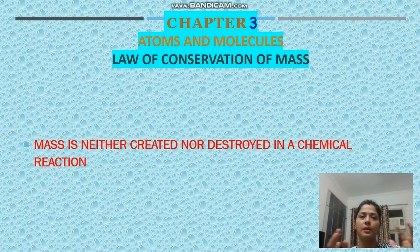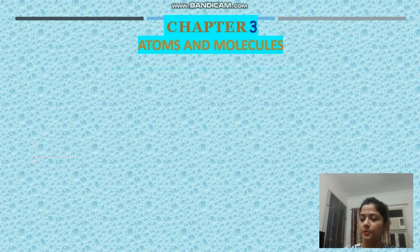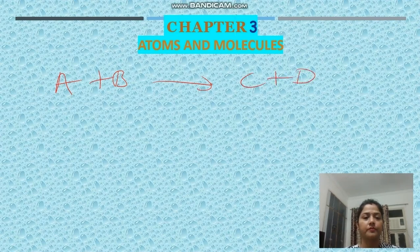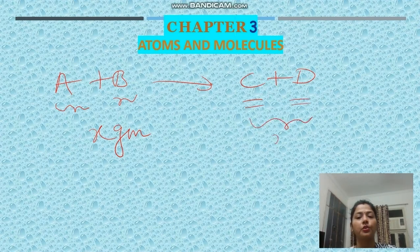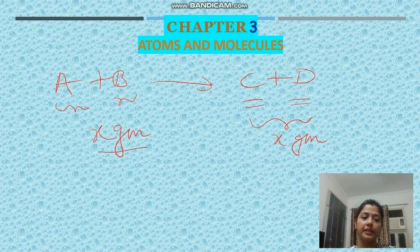I will explain it more. Suppose A plus B combines to form C plus D. If the mass of A and B combined is, suppose, X grams, then the mass of C and D combined will also be the same X grams. The mass is conserved - mass is neither created nor destroyed.